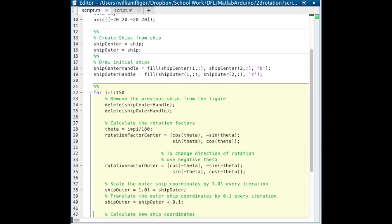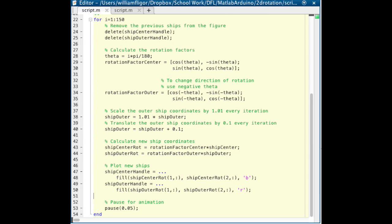In the loop, for 1 to 150, use the handles to delete the previous ships from the figures.